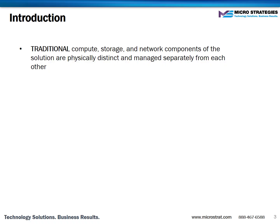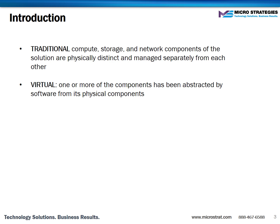Before we talk about the various options we should try to define a few terms. Different vendors use the same words to mean different things. For the purposes of this video, when we use the word traditional we mean that the compute, storage, and network components of the solution are physically distinct and managed separately from each other. When we use the word virtual we mean that one or more of the components has been abstracted by software from its physical components. The most common virtual deployments are in the compute stack, but storage and network virtualization have also gained traction in recent years.